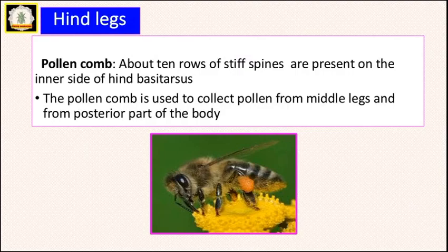The third structure on the hind legs is the pollen comb. About ten rows of stiff spines are present on the inner side of the hind basitarsus. The pollen comb is used to collect pollen from the middle legs and from the posterior part of the body.